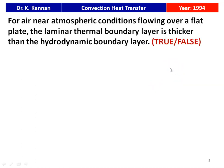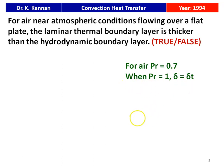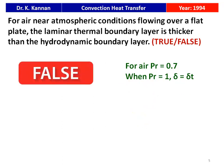Next question: for air near atmospheric conditions flowing over a flat plate, the laminar thermal boundary layer is thicker than the hydrodynamic boundary layer — true or false? For air, the Prandtl number is approximately 0.7, which is taken as approximately 1. So for air, delta equals delta_T — the thermal boundary layer thickness equals the velocity boundary layer thickness. Therefore, the statement given is false.